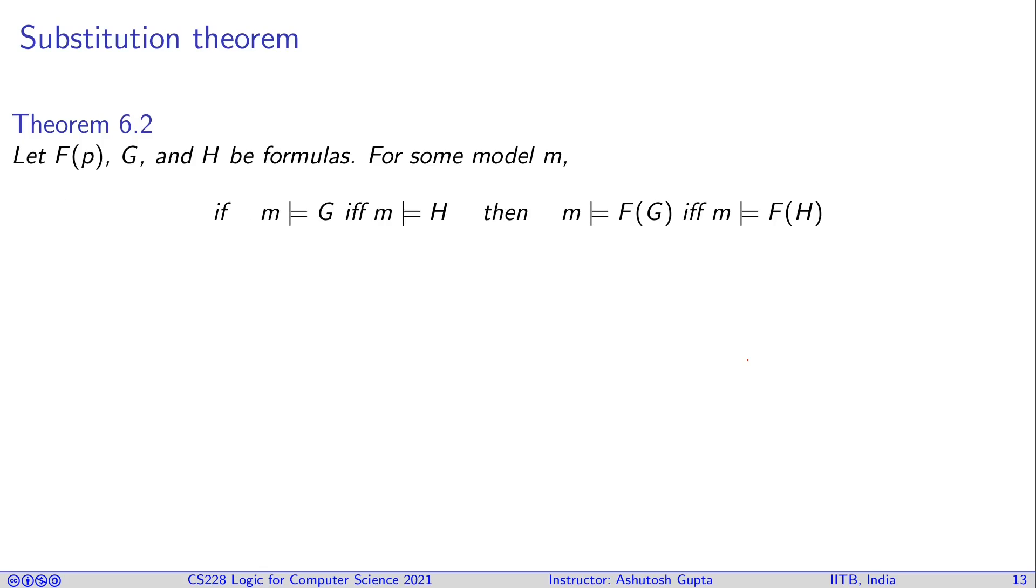Let's suppose you have a formula F(p), formula G, and formula H. For some model m, you have the property that m satisfies G if and only if m satisfies H. The truth values with respect to m for these two formulas are the same. Assume the left-hand side is true and we will show the right-hand side. We will prove the theorem using structural induction over the structure of F.